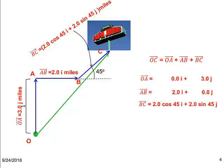To find the X component of resultant vector OC, we can add X components of displacement vectors OA, AB, and BC.